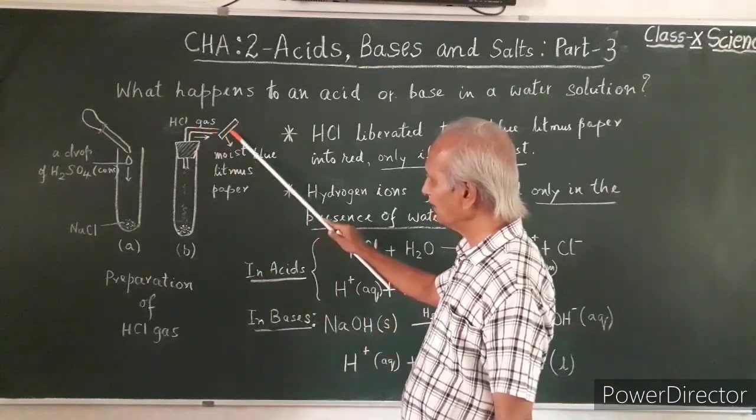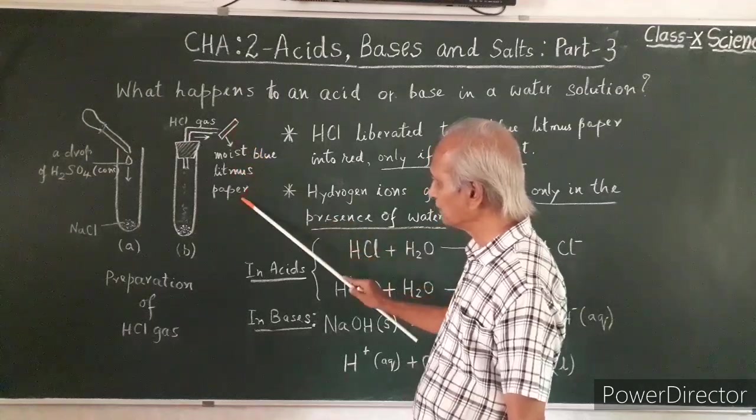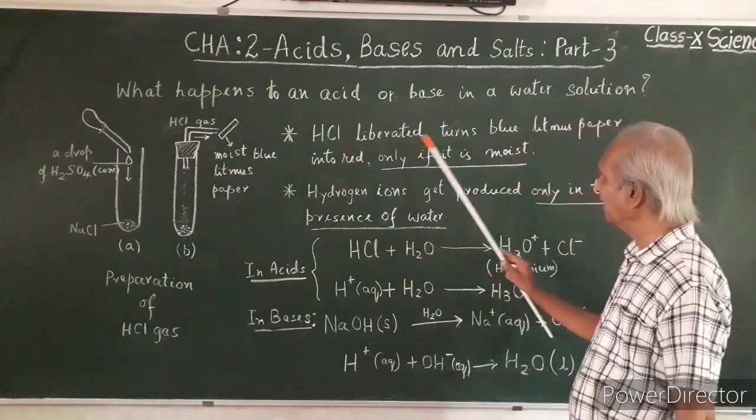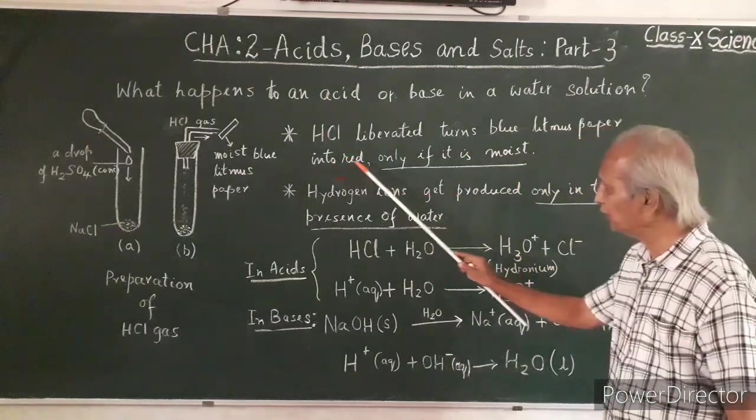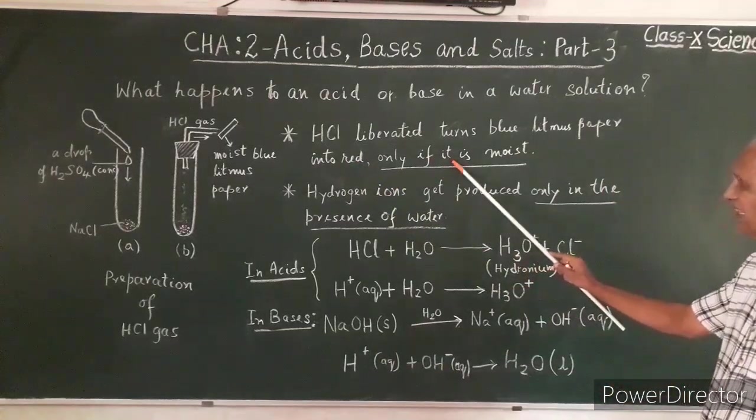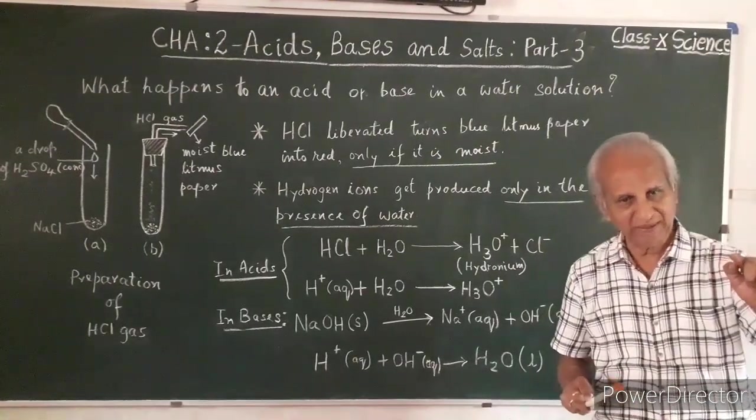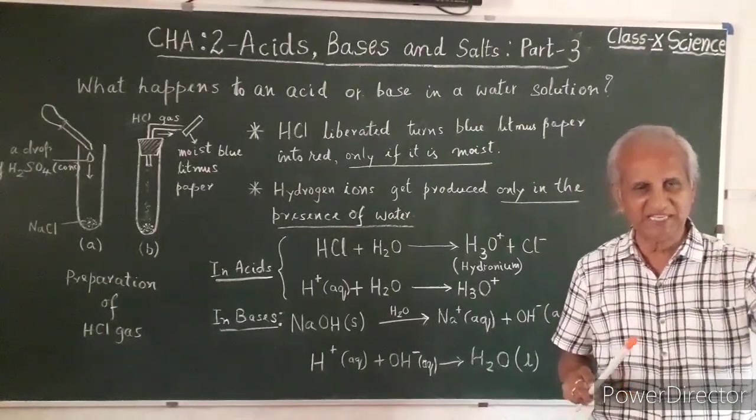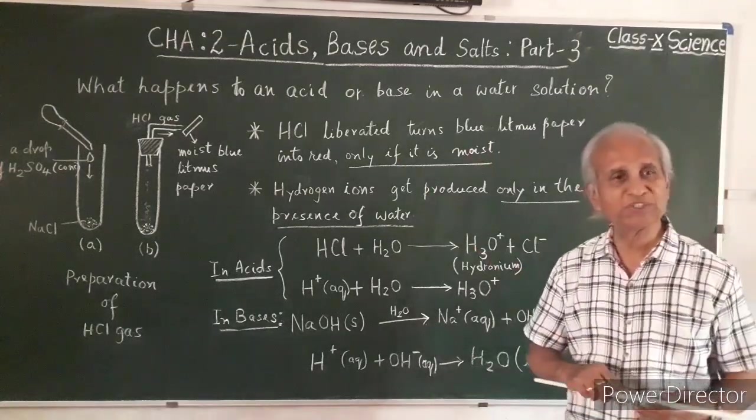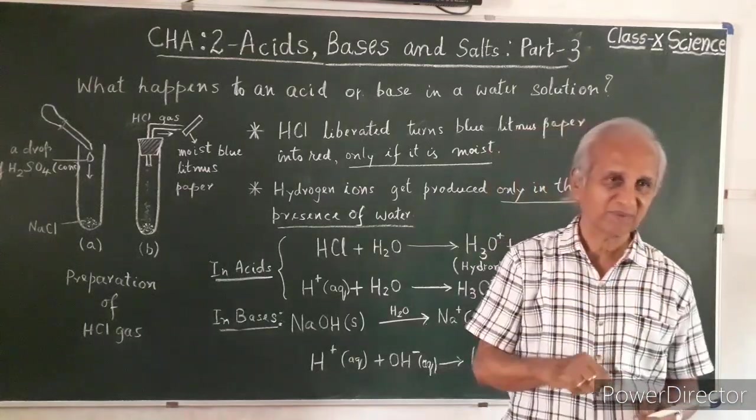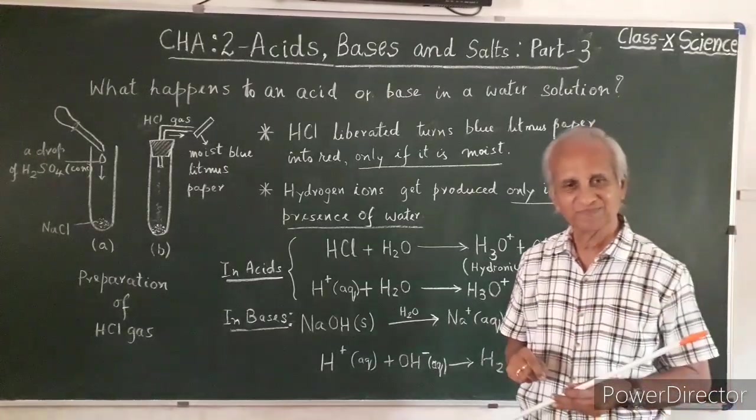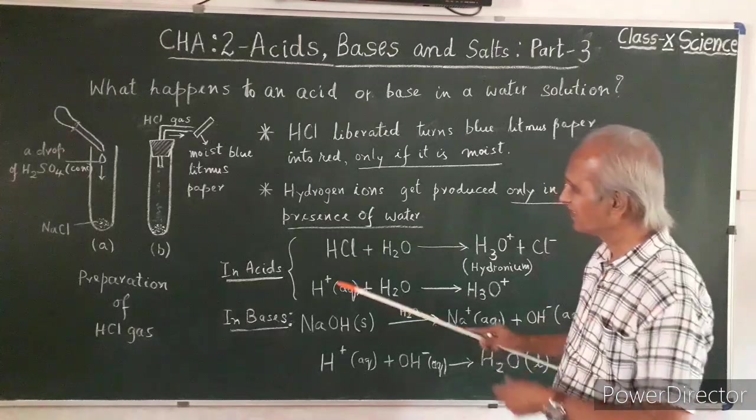HCl gas that comes out reacts with moist blue litmus paper and turns it into red. HCl liberated turns blue litmus paper into red, only if it is moist. If you hold dry paper, no change. If it is moist, there is a change. The moisture that the paper has worked out a miracle.